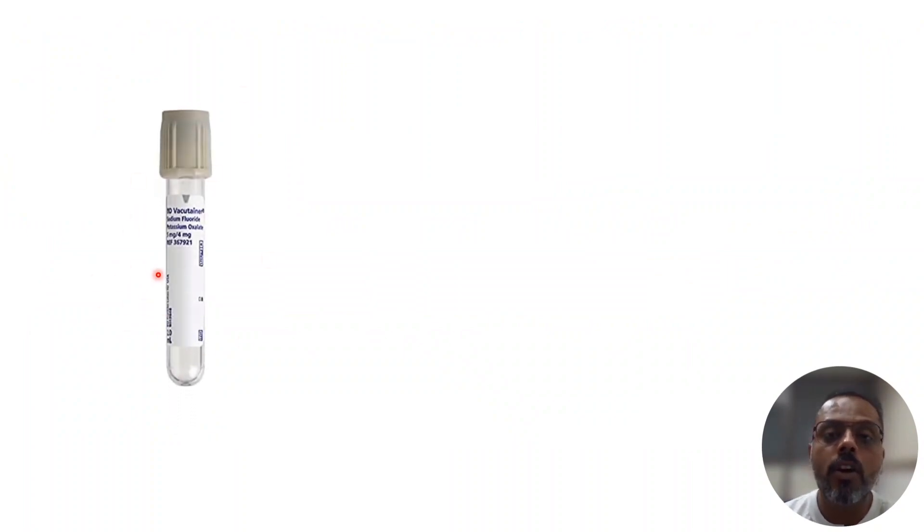This is the picture of fluoride vacutainer. It is a gray color tube. You have to collect the blood for glucose estimation in this fluoride vacutainer. If you don't collect the blood in fluoride vacutainer for glucose estimation, it can result in a lower blood glucose value. In the case description, the person is completely normal but the blood glucose level was 42 milligram per deciliter, so that is towards hypoglycemia. It can result in a misdiagnosis.